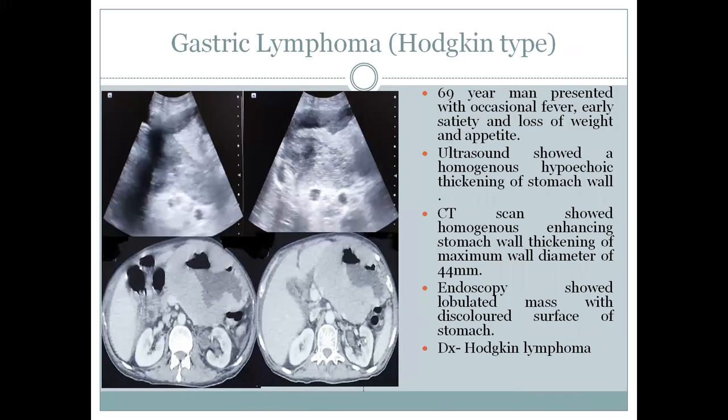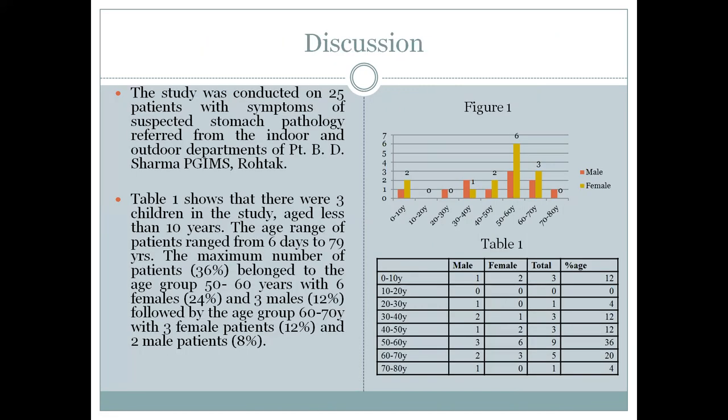A 69-year-old male patient presented with fever and early satiety. Ultrasound showed thick, homogeneous hypoechoic thickening of the stomach wall. CT scan showed stomach wall thickening with maximum wall diameter of 24 mm. Endoscopy showed a lobulated mass on the surface of the stomach, and the diagnosis was gastric hypoglycemic lymphoma.